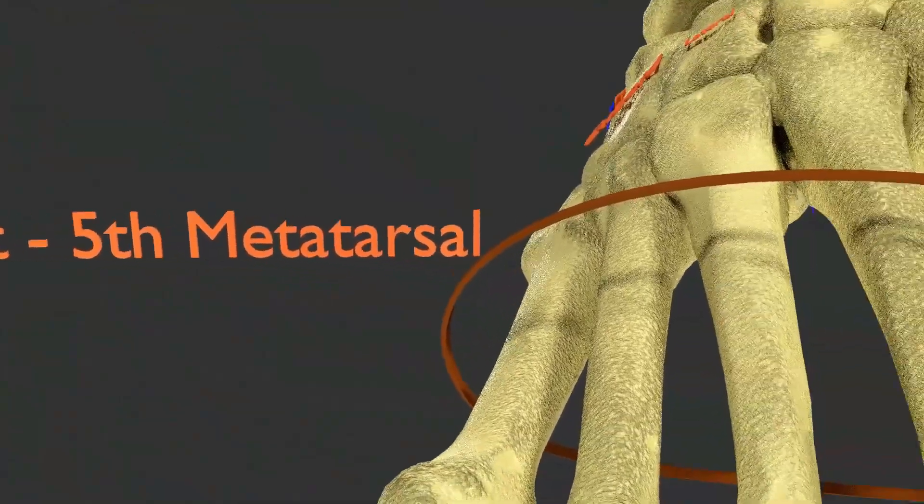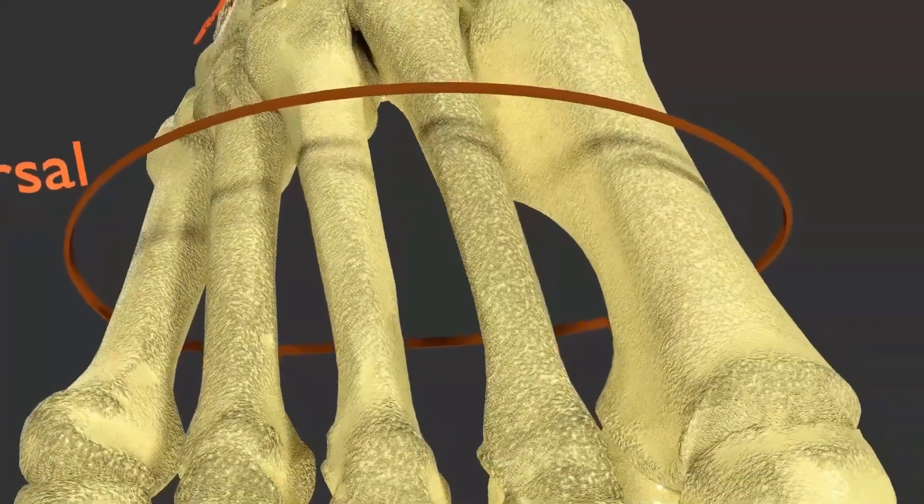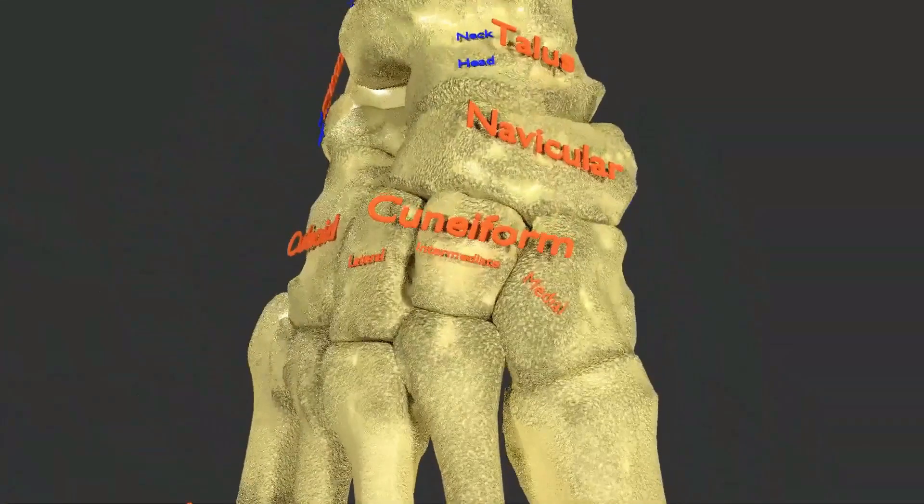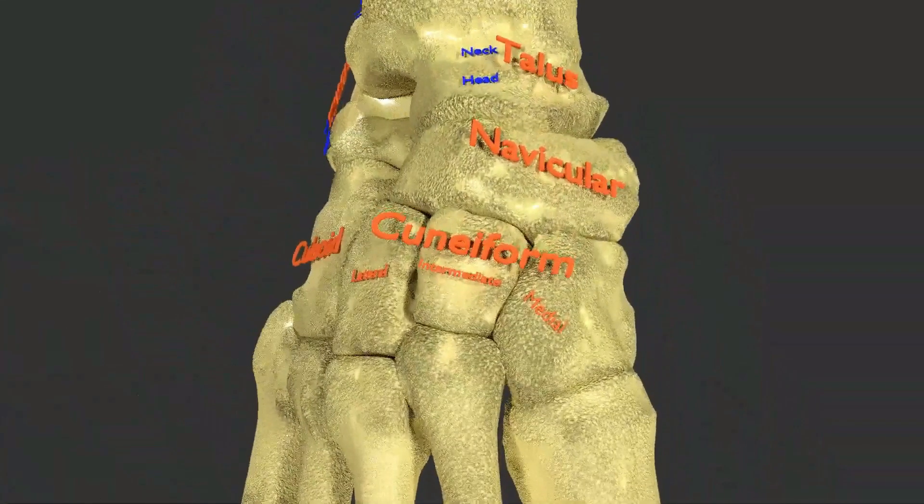The five metatarsals are now seen as small long bones joining the phalanges with the tarsal bones.